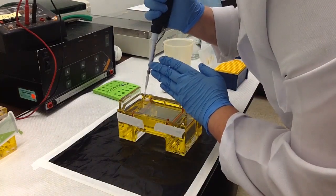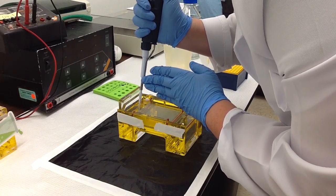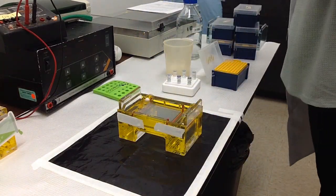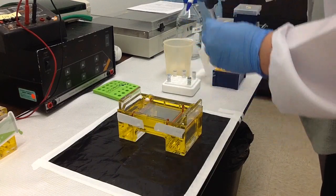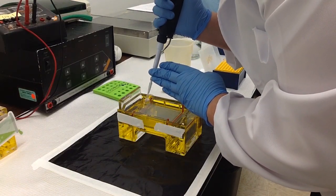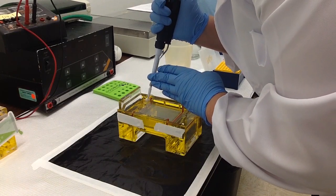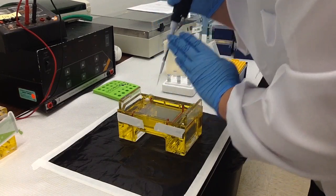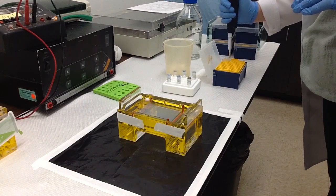Using the same technique but in a separate gel, I will be loading a 1KB, a 1KB plus, and our Versa ladder. Our Versa ladder is unique in that it has bands of varying sizes all the way from 100 base pairs up to 10,000 base pairs.